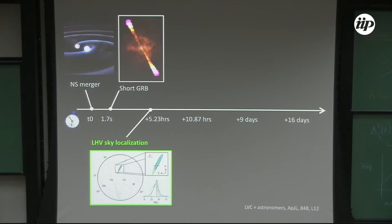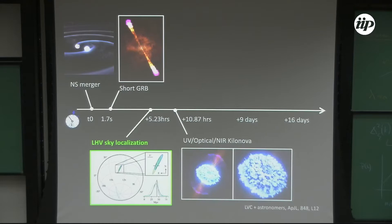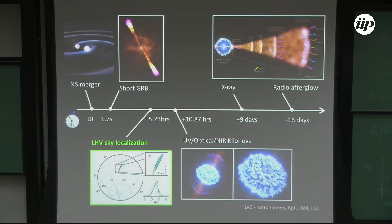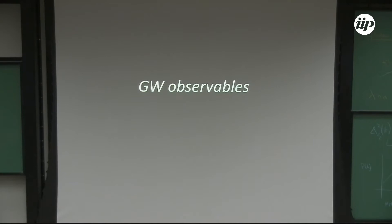Then you have ultraviolet, optical, near-infrared emission about 10 hours afterwards. Nine days after, X-ray emission appeared. A radio afterglow started after 16 days and went on for about a year.